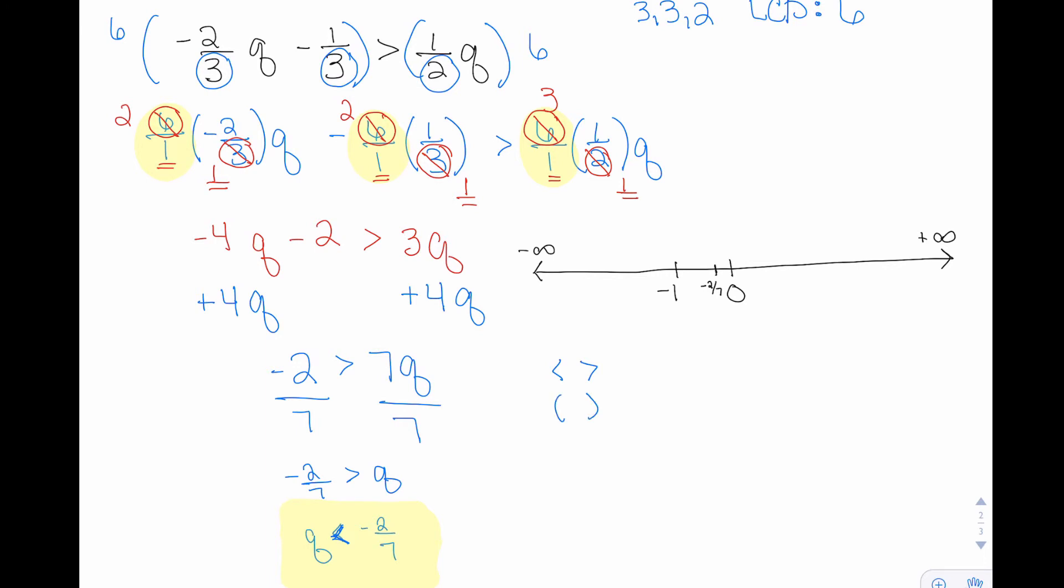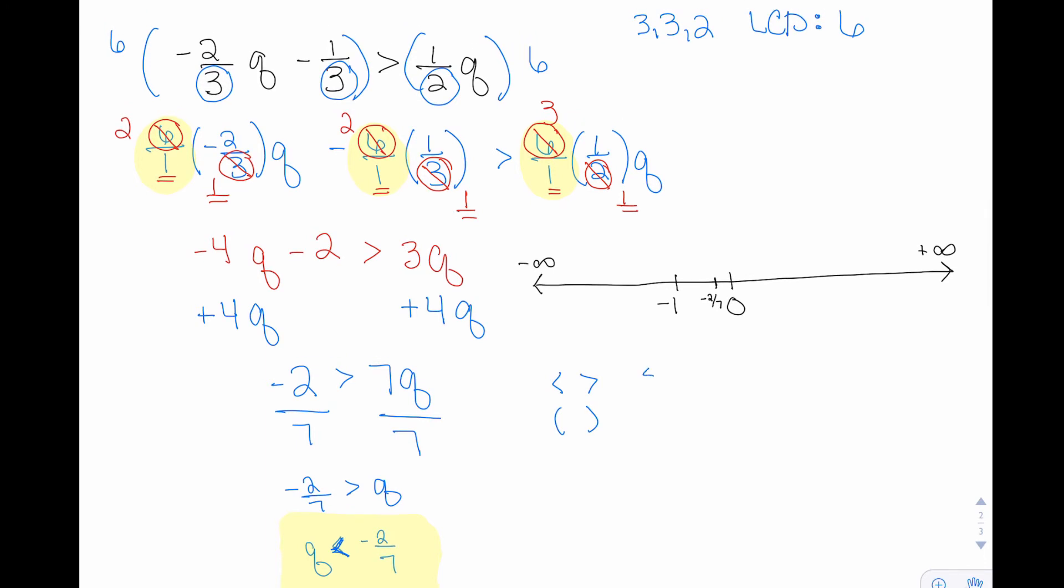Remember that if it's either less than or greater than, we use the parenthesis. If it was less than or equal to or greater than or equal to, we would use a bracket. For this example, we're going to use a parenthesis because the inequality states that Q is less than negative two over seven.